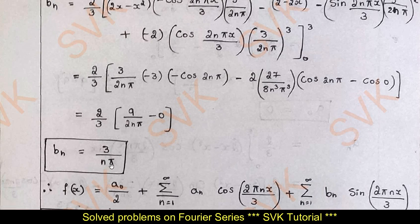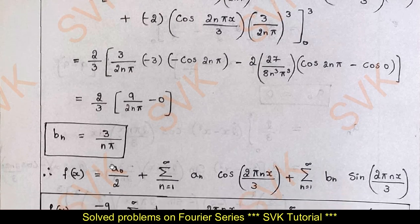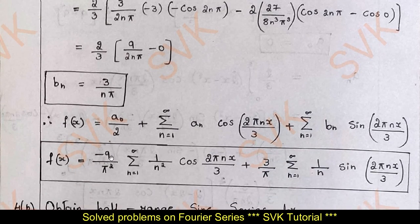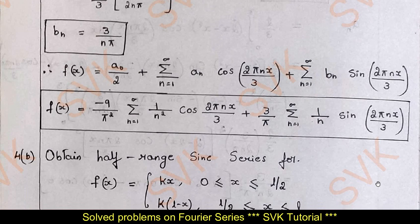Substituting the values of a₀, aₙ, and bₙ into the Fourier series expression, we get f(x) = −(9/π²) Σ (1/n²) cos(2nπx/3) + (3/π) Σ (1/n) sin(2nπx/3), which is the required solution.